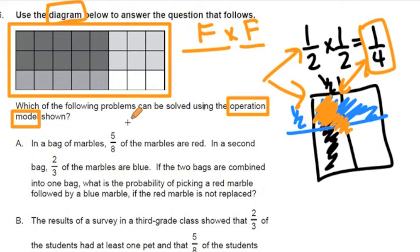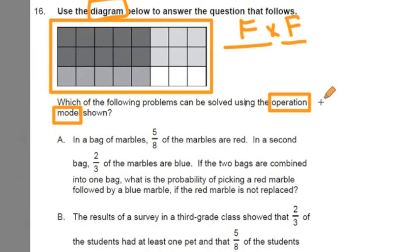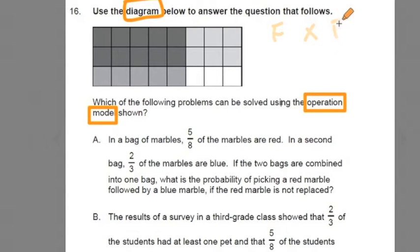Now let's look at this model here. Now we know this problem involves a fraction times a fraction. So let's look at this array here. What are the fractions being used in number 16?